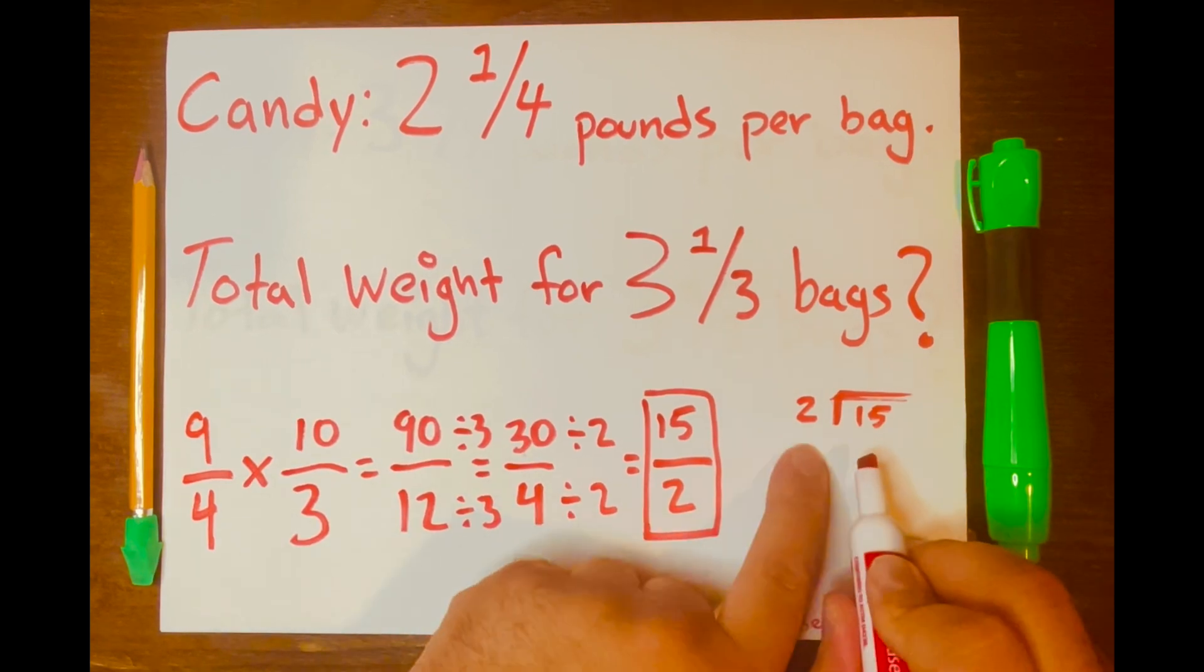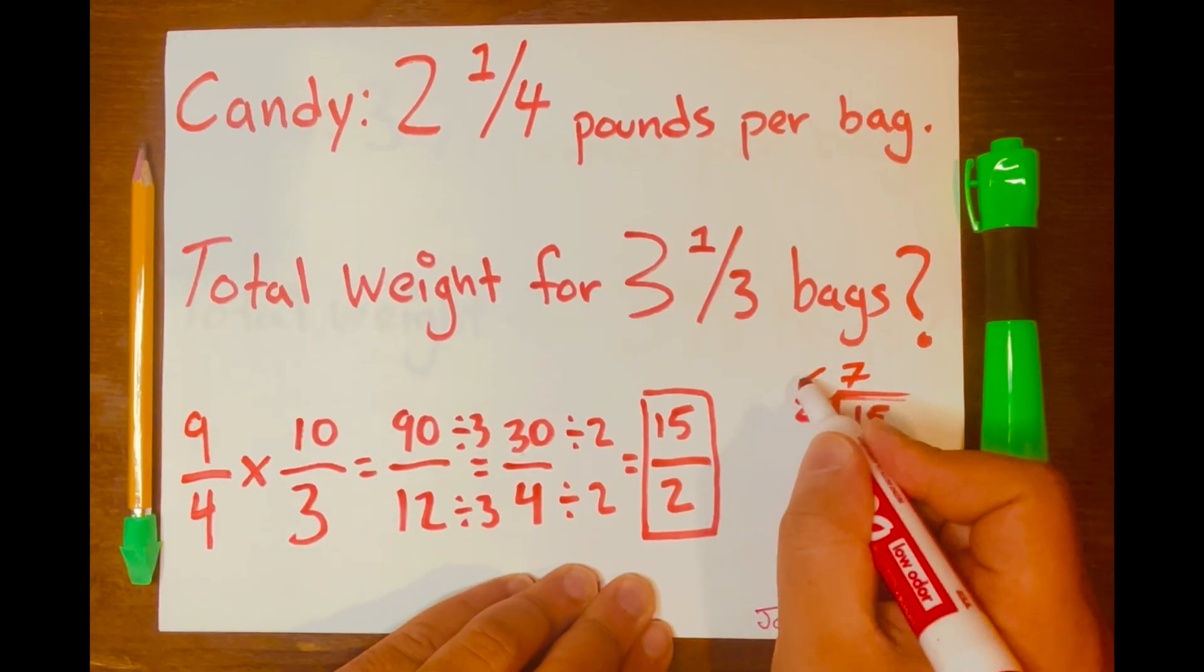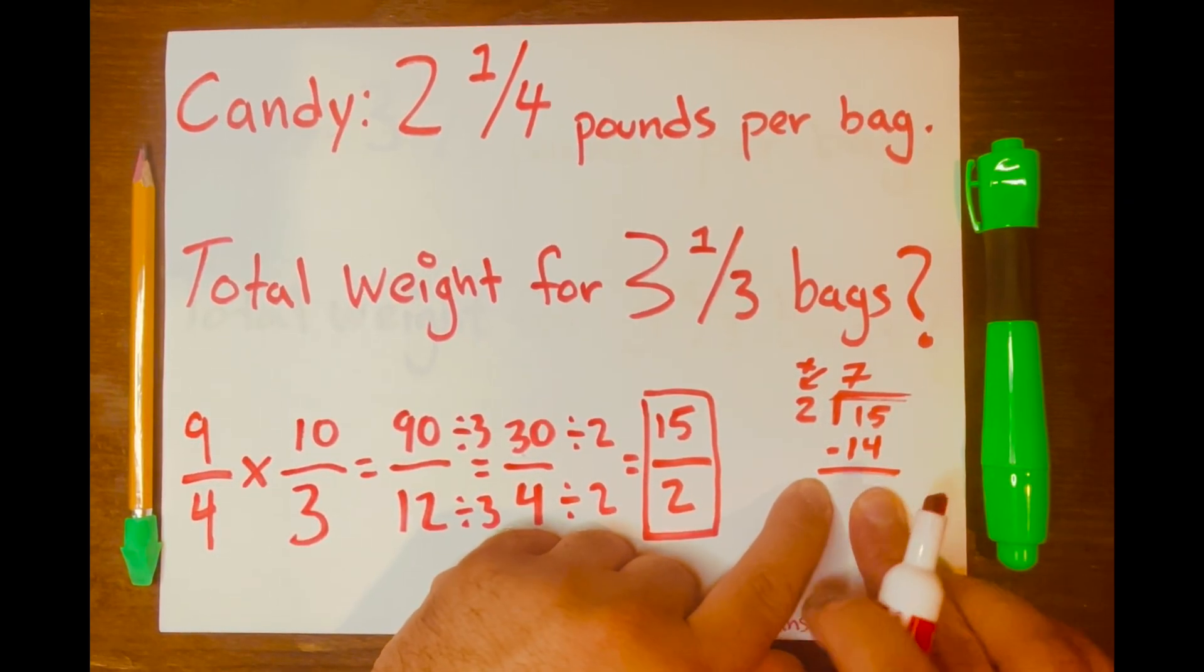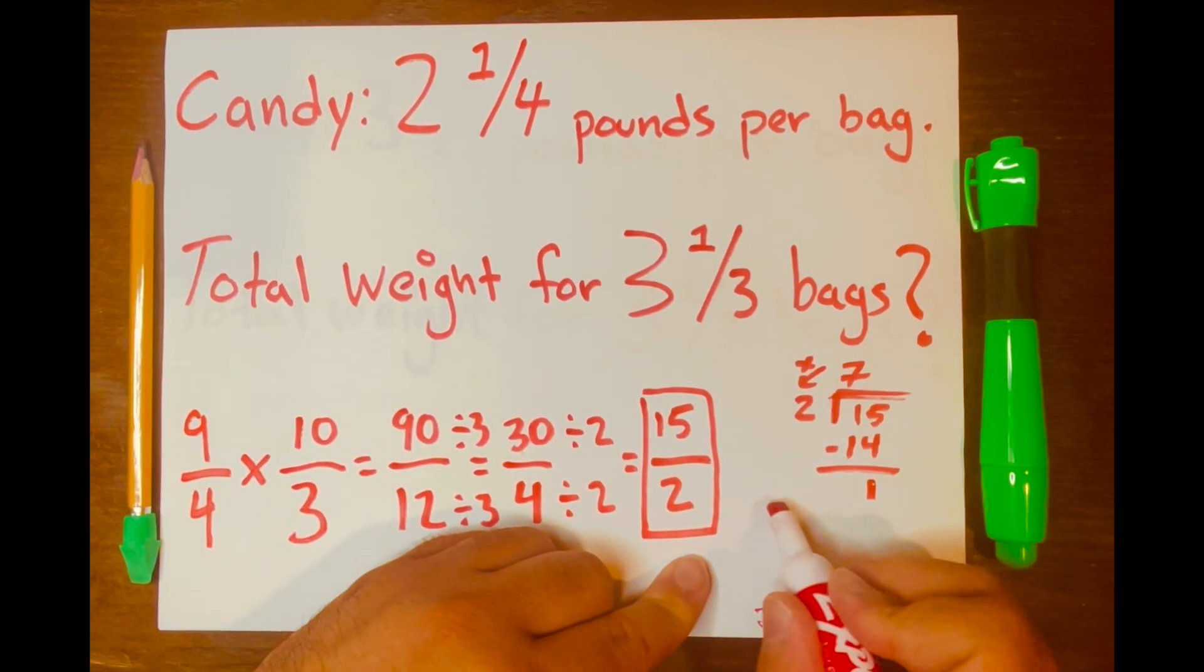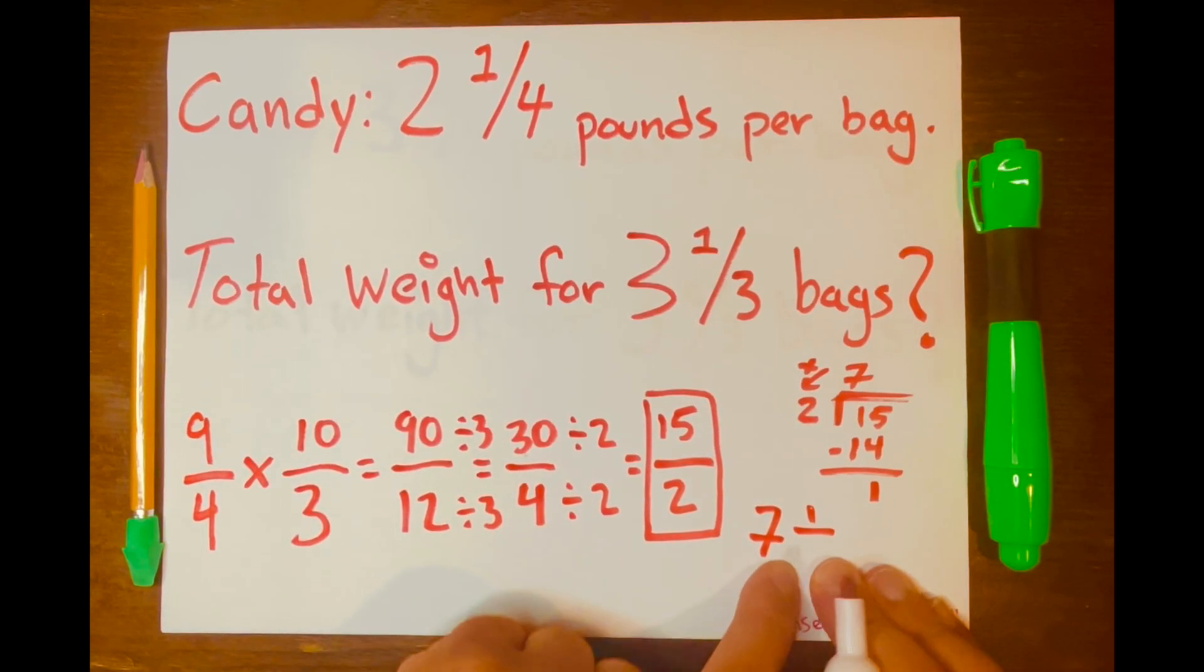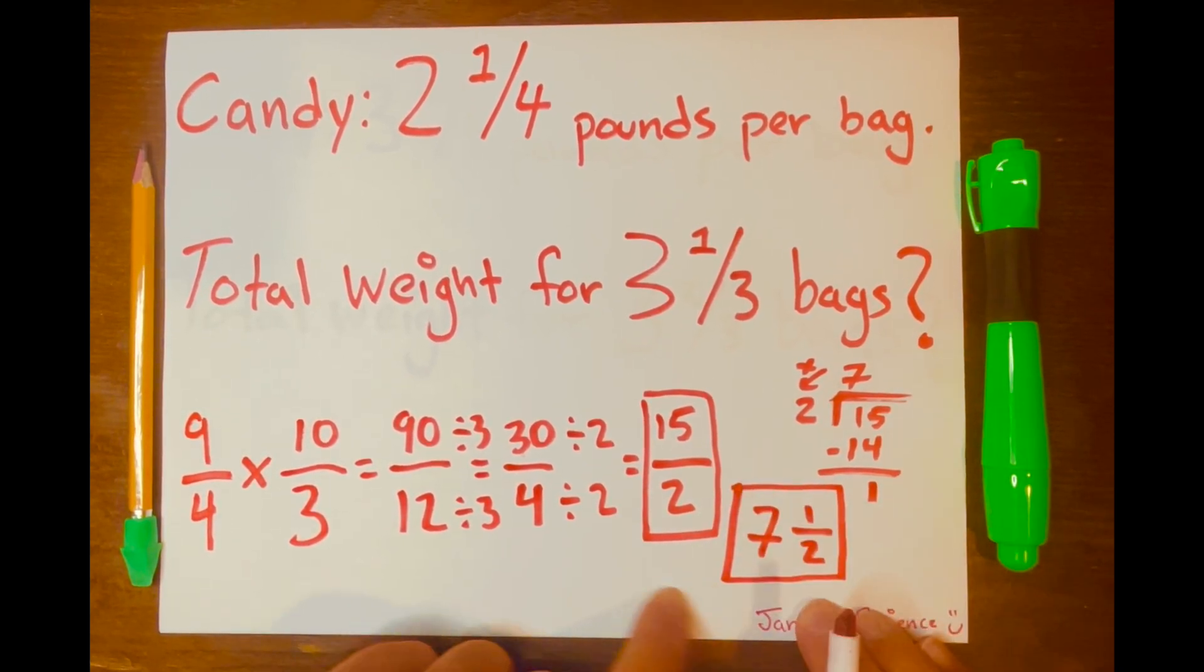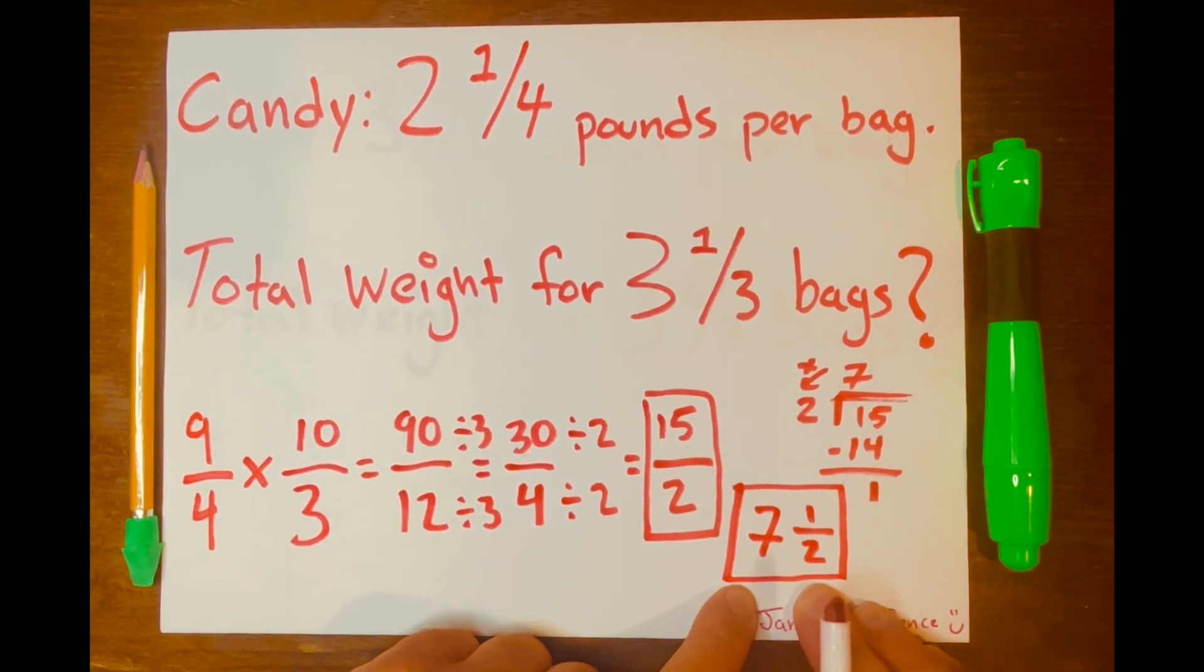So how many times can two fit into 15? Seven times. And seven times two is 14. And 15 minus 14 is one. So you have a remainder of one. So your whole number will be seven. Your remainder will be on top of the fraction. And then you keep the denominator as two. So your mixed number answer is seven and one over two, or seven and a half.